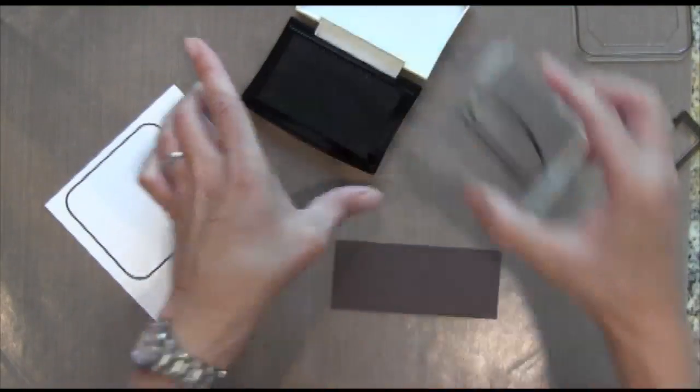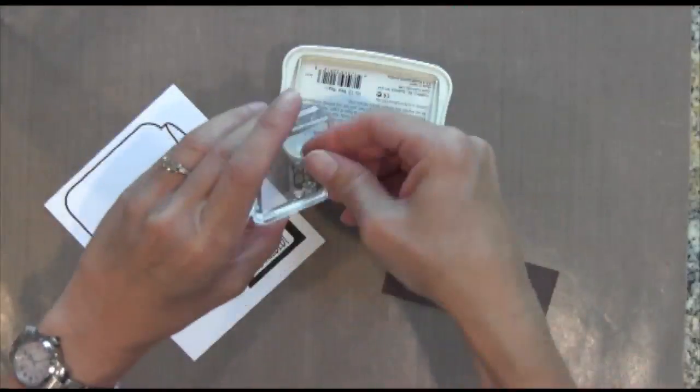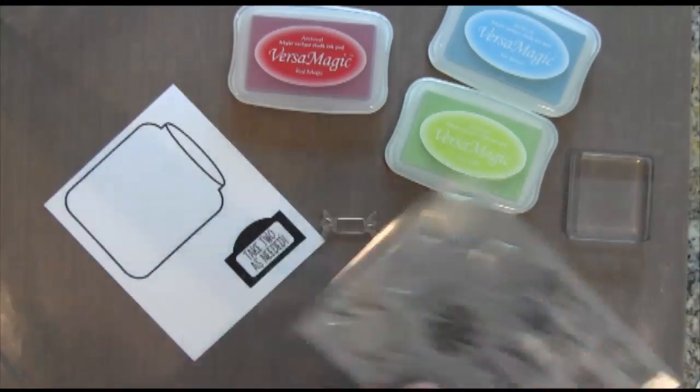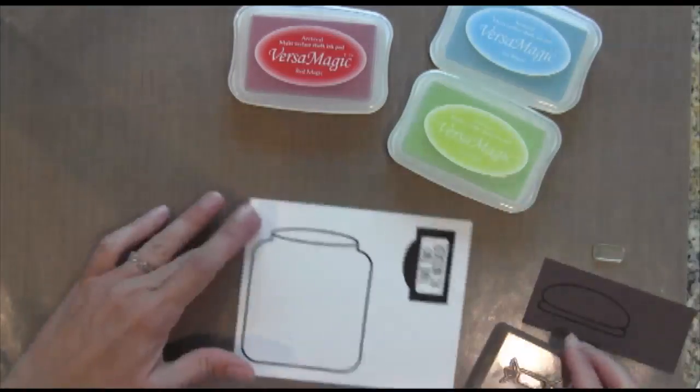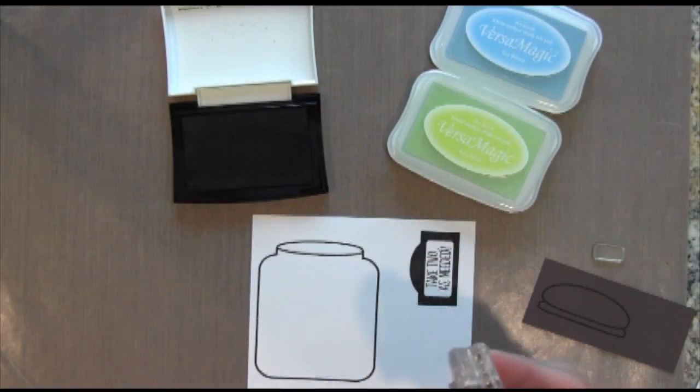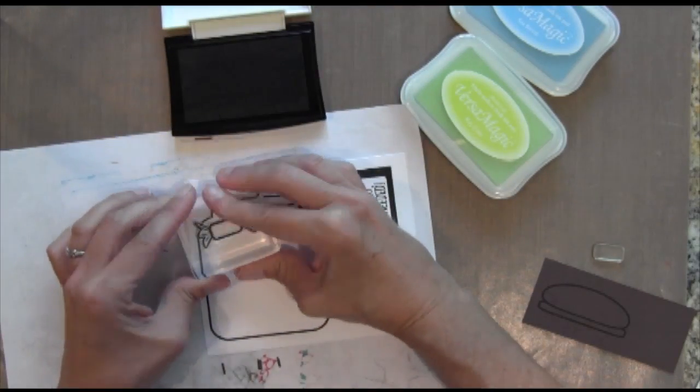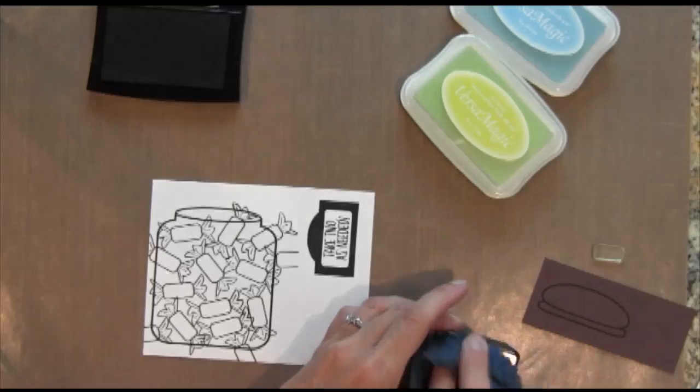I'm going to stamp the top on chocolate chip cardstock by Stampin' Up. And you'll see later why because I'm going to do a little technique on that. So from the other candy set I'm going to use the wrapper and I'm going to do all the wrappers in black and I'm just going to randomly stamp them all over this jar. And I'm not going to worry about going outside the jar because I'm going to cut it out.